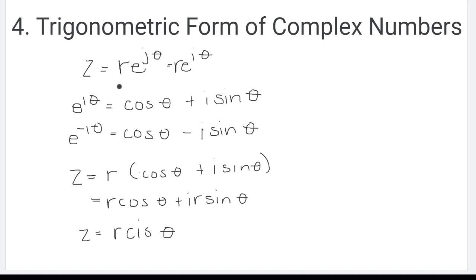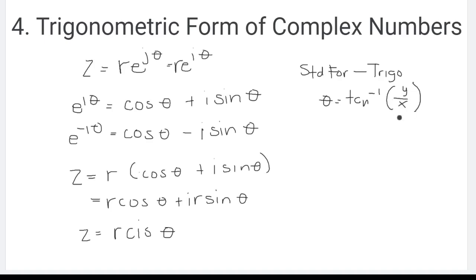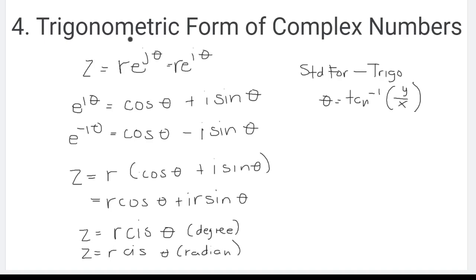To convert directly from standard form to trigonometric form, compute R using the modulus and find theta using arctan of y over x. Then write the angle in the CIS notation. The trigonometric form can be expressed in degree form or in radian form, depending on what is required.